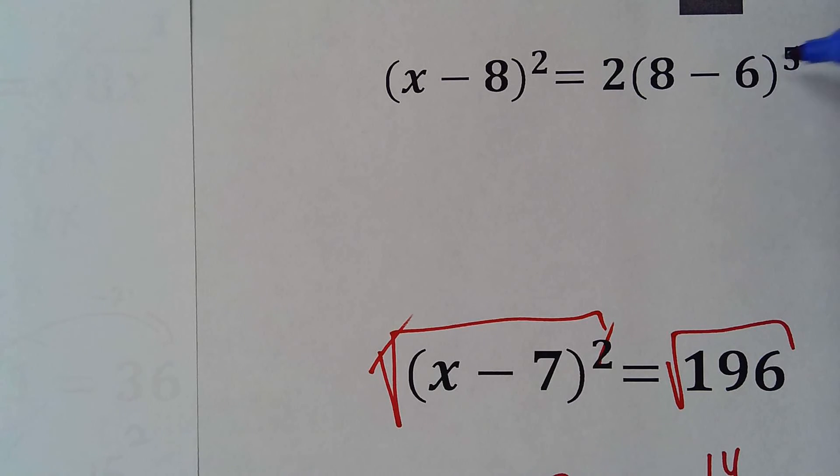So 8 minus 6 is 2, 2 to the 5th is 32, and 32 times 2 is 64. So this side here, all this is 64.